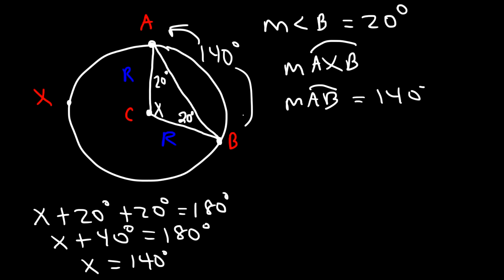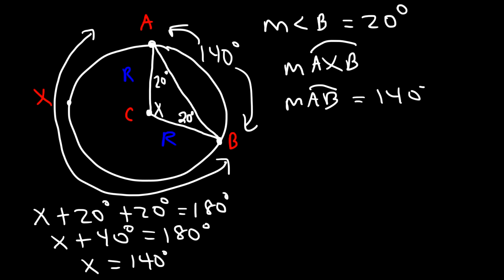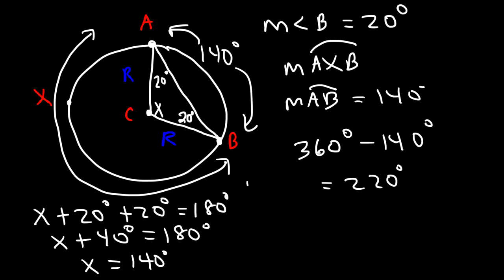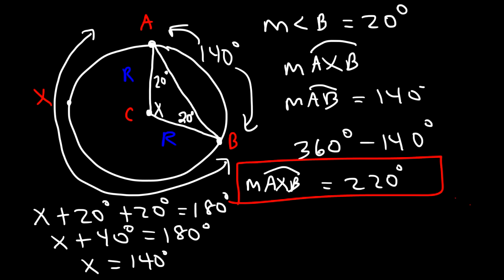Now that we have arc AB as 140 degrees, we can calculate the major arc AXB. It is 360 minus 140, which equals 220 degrees. So the measure of arc AXB, the major arc, is 220 degrees.